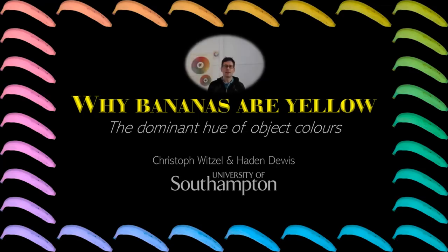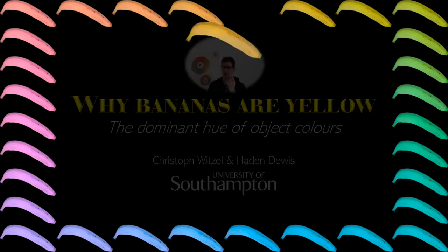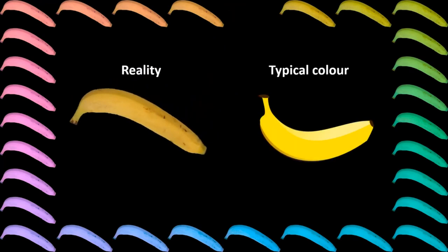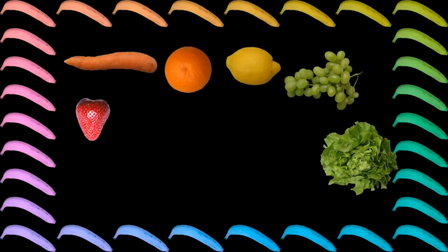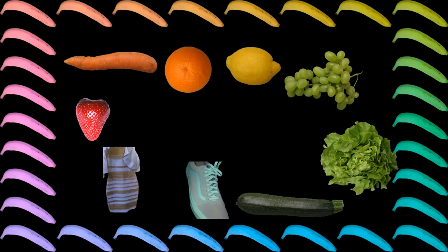Bananas are an example of objects that are perceived as having one single color. That one color is the typical color of bananas. Of course, this talk is not just bananas, but it applies to all kinds of realistic stimuli that are perceived as having specific colors.